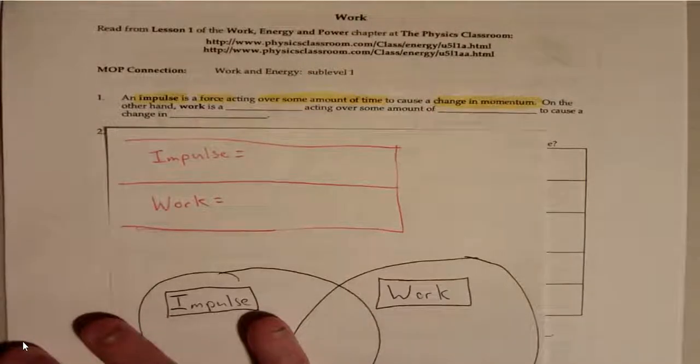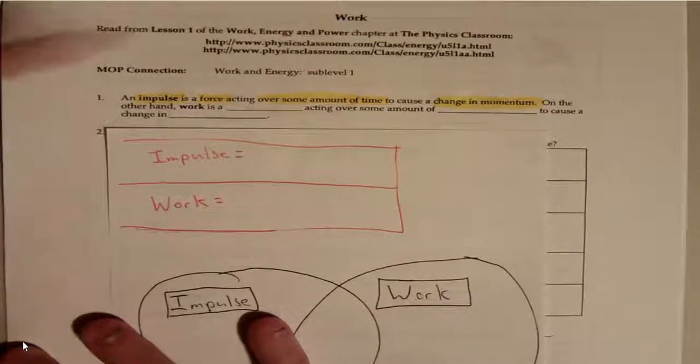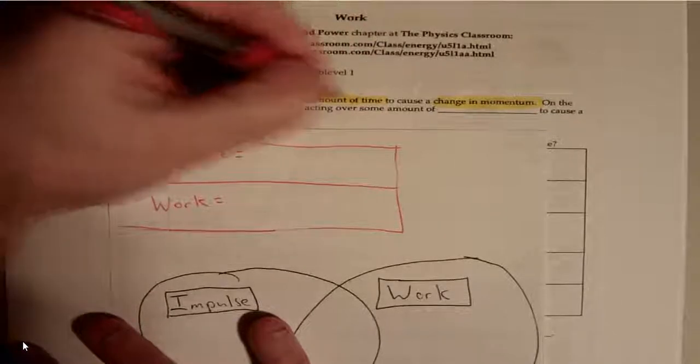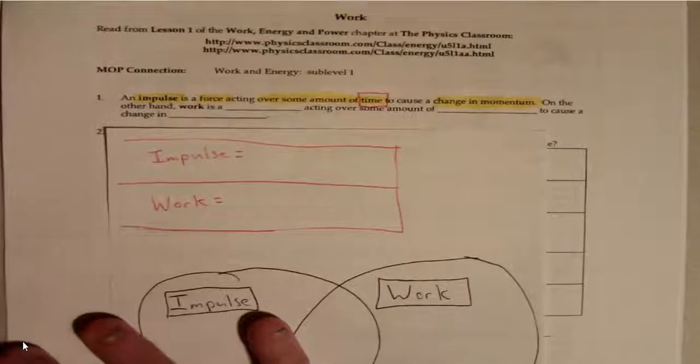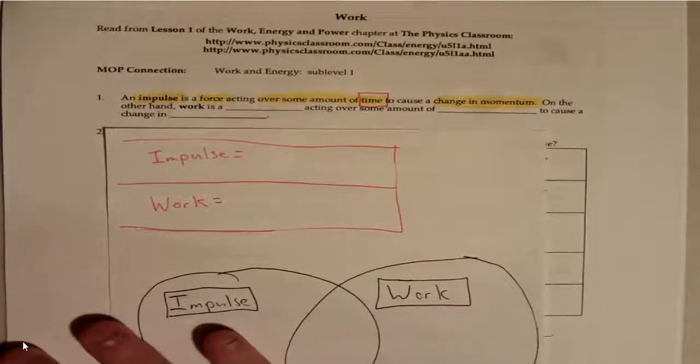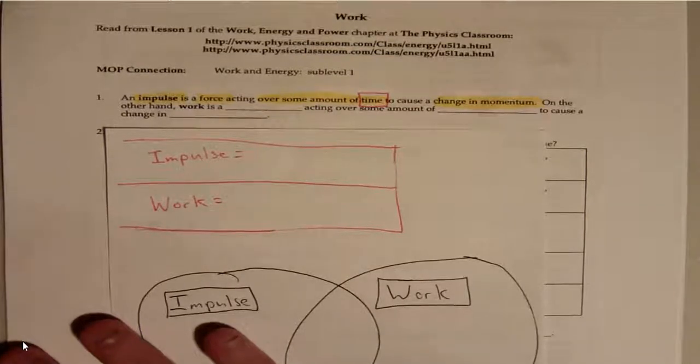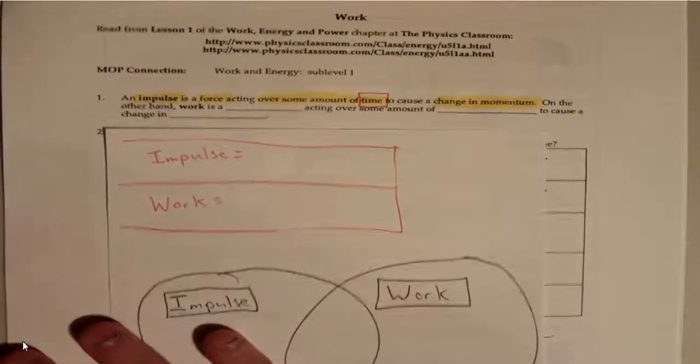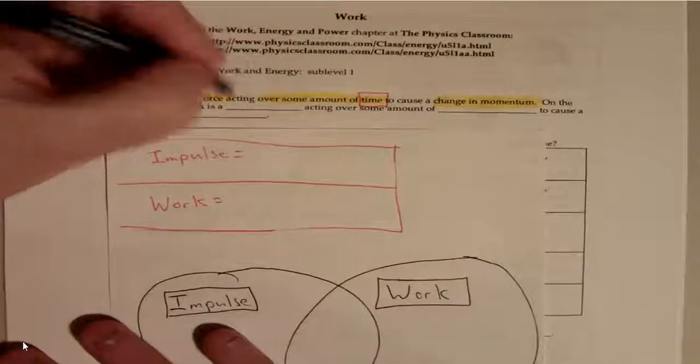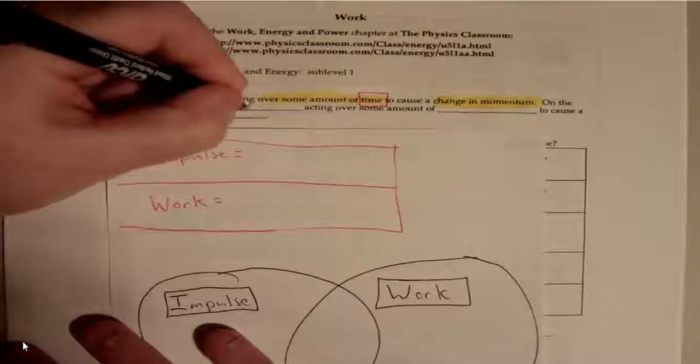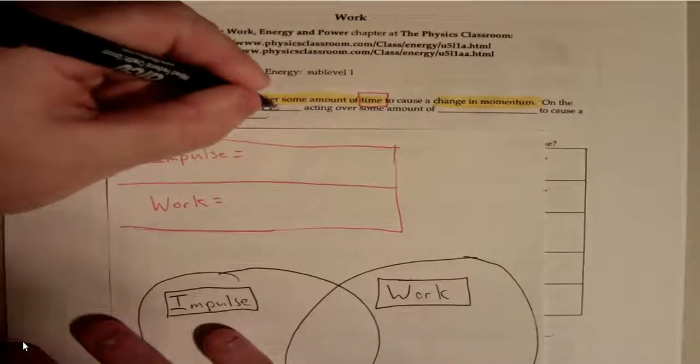So let's look at this. I think the number one important thing here is time. Now let's look at work. Work is a blank acting over some amount of blank to cause a change in blank. Hopefully you did your definitions because if you did those, it'll be easy. We know that work is also a force.